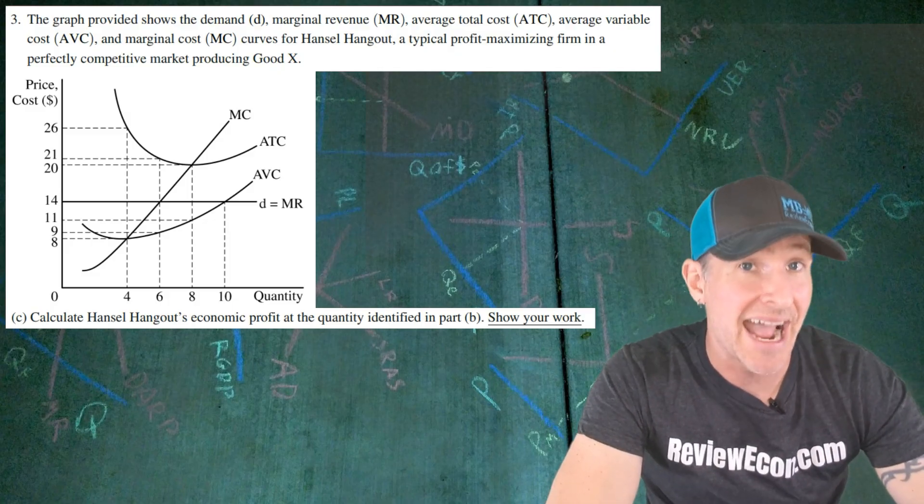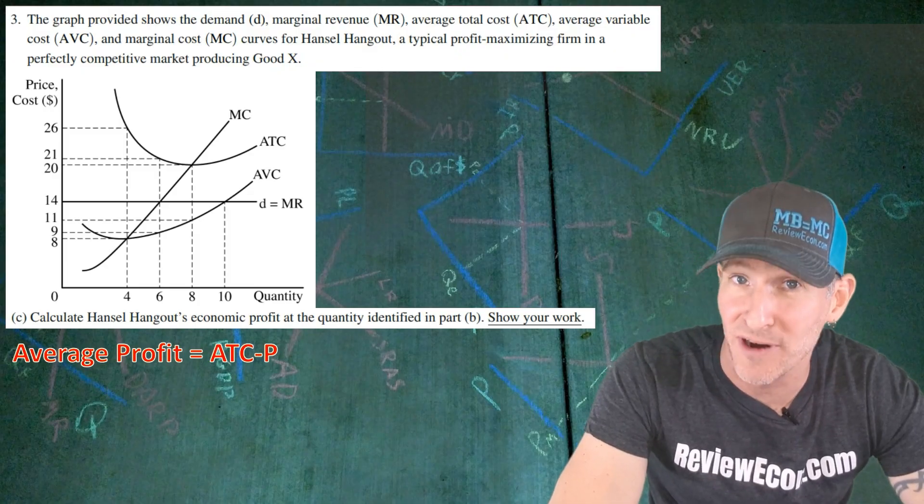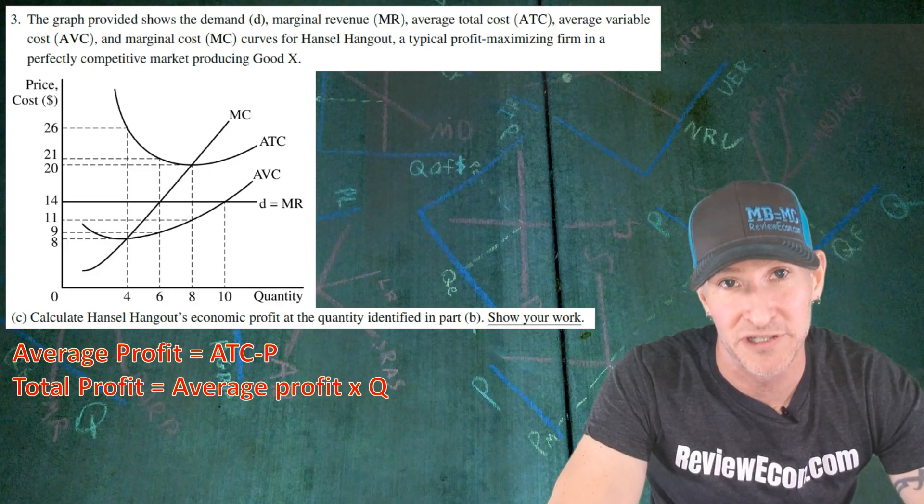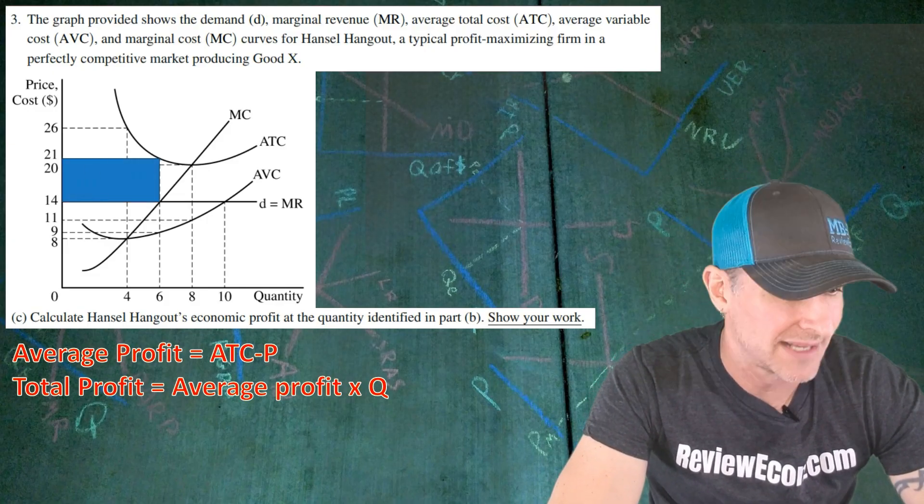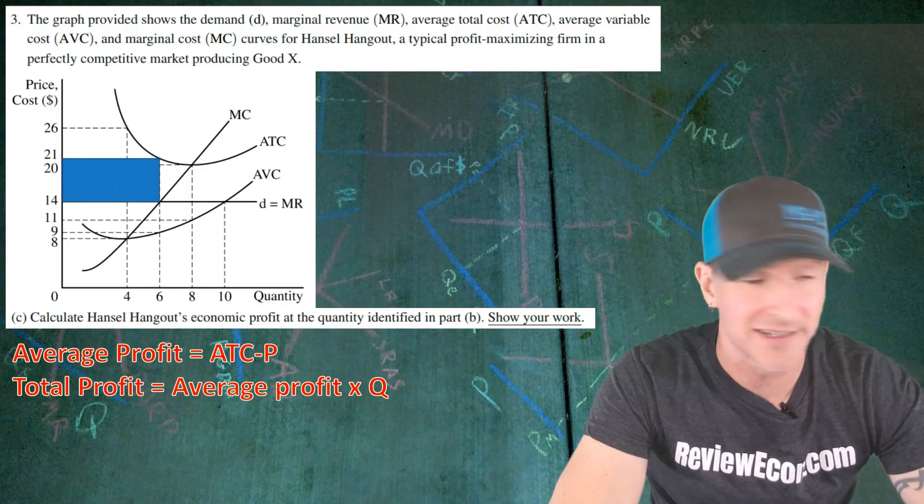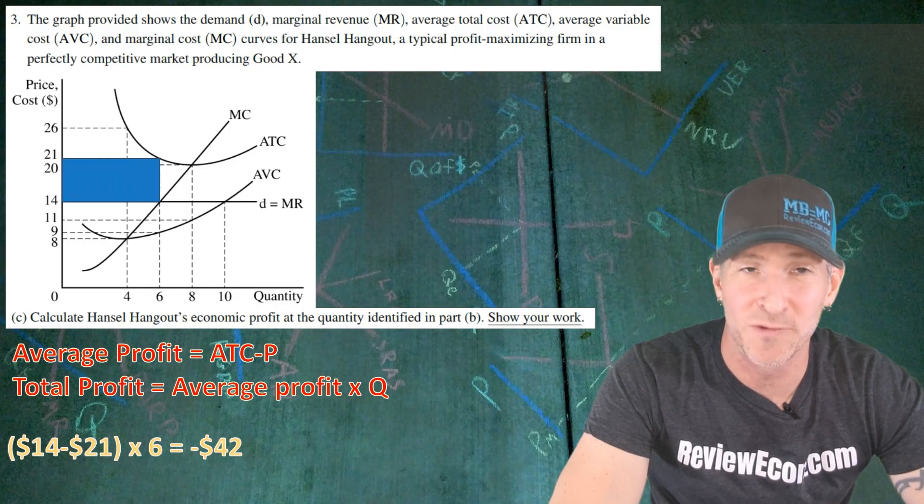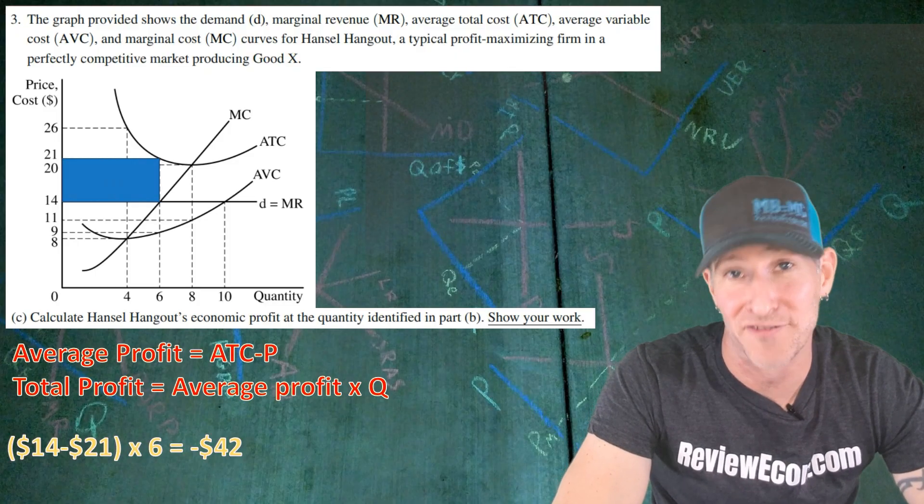First, we find the average profit. That's the difference between the average total cost curve and the price at the profit-maximizing quantity. And then we multiply that by the quantity produced. Essentially, we're calculating the area of that rectangle right there. That is the loss box. So calculate it all out. $14 minus $21 times six gives us negative $42 of economic profit.